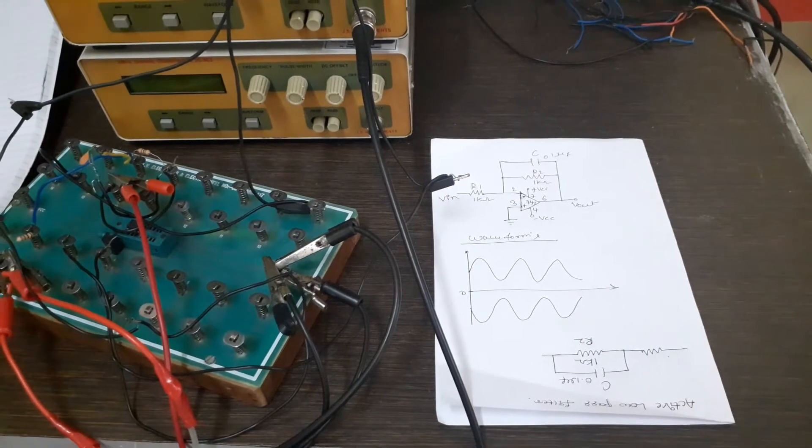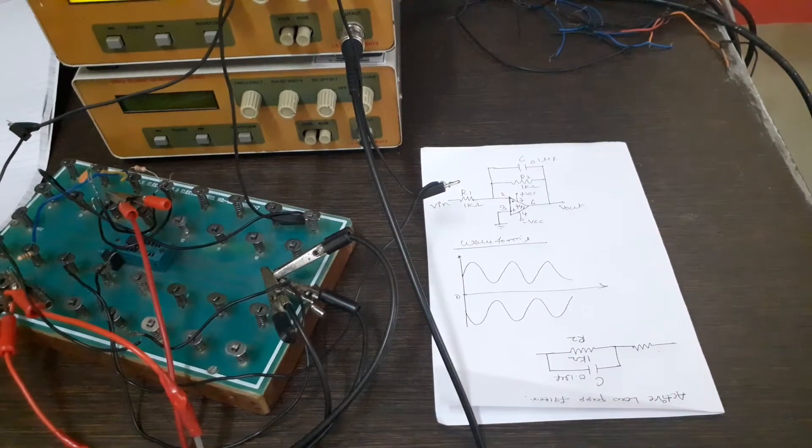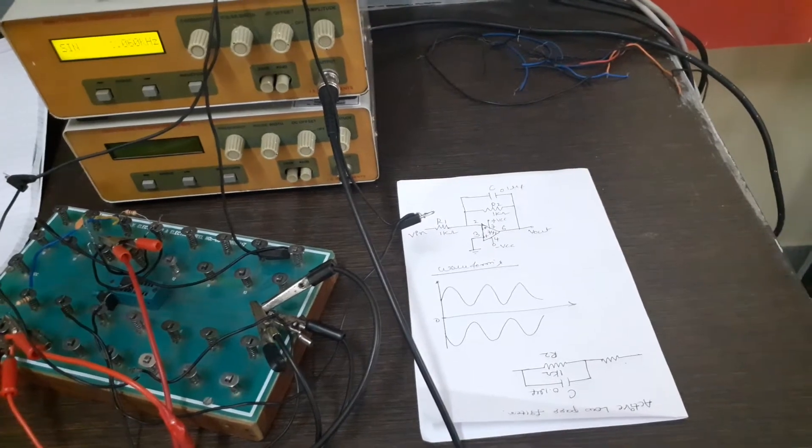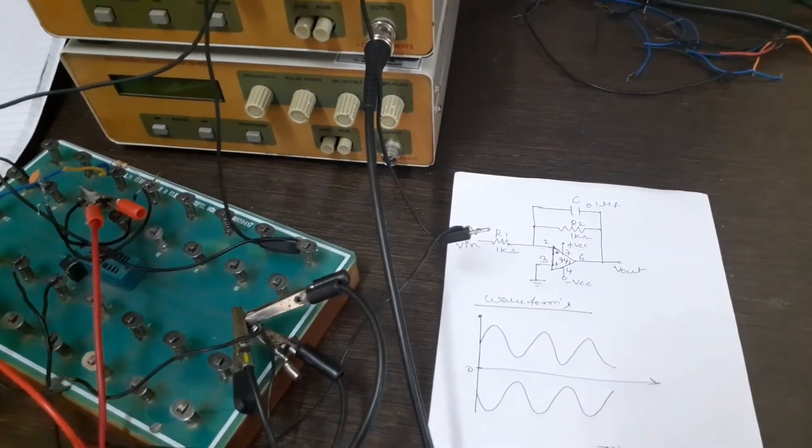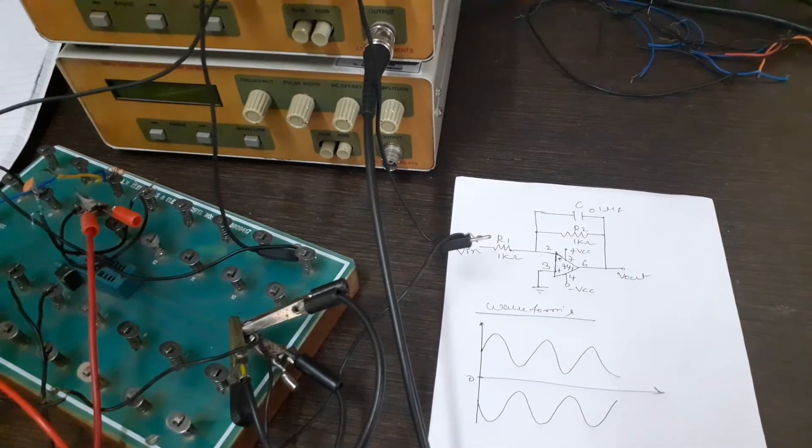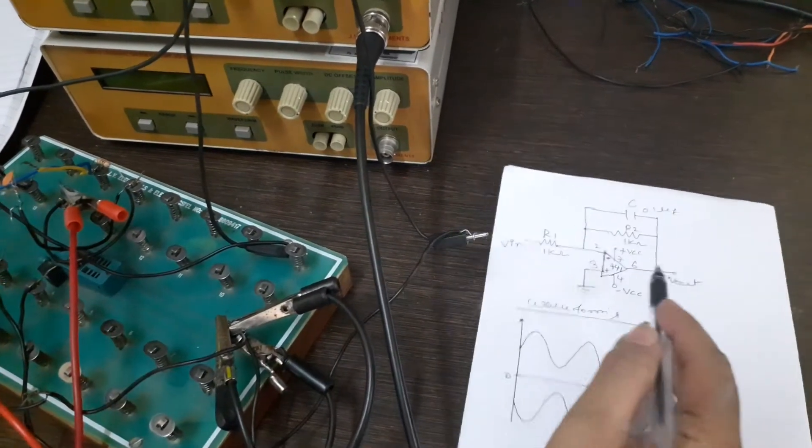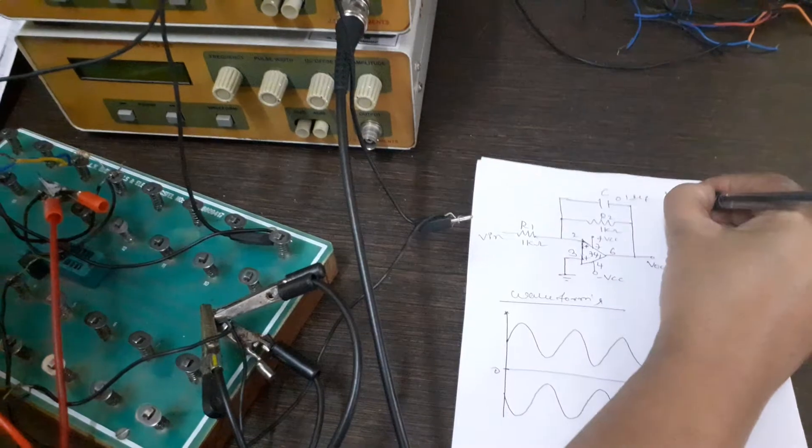What the active low pass filter is doing is it passes the signal with the frequency lower than the certain cutoff frequency and attenuates the signal with higher frequencies than the cutoff frequency. Now this is the circuit for the low pass filter.